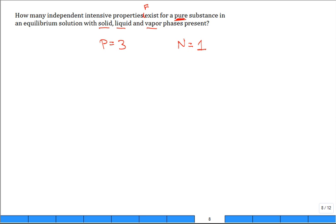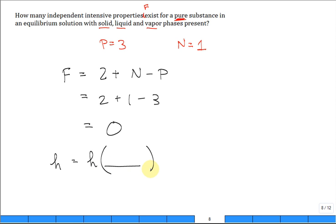Let's apply Gibbs phase rule. You have two plus N minus P, two plus one minus three. What do you get? Hold it. What does that mean? That means if I wanted to know the enthalpy, it's a function of what? What's going on here? It's a function of nothing? It's the triple point.